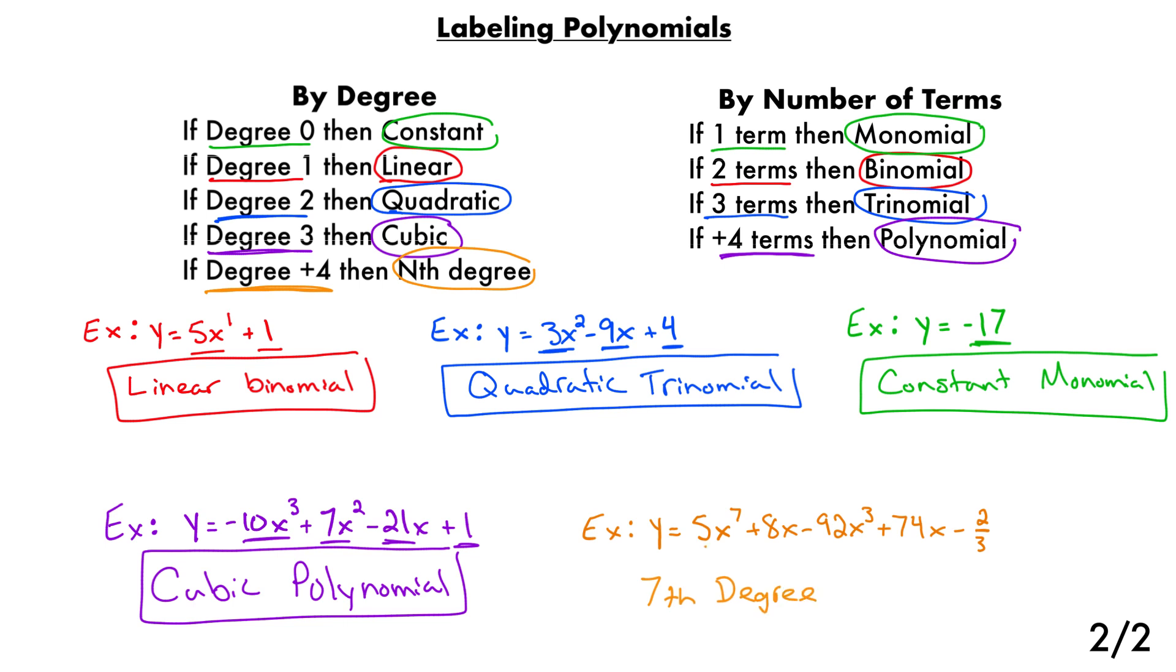And then we count the number of terms, there's one, two, three, four, five terms, that also, kind of like the purple problem, is greater than four. So we will also call this a polynomial. So it's a seventh degree polynomial.